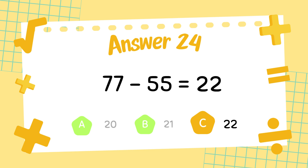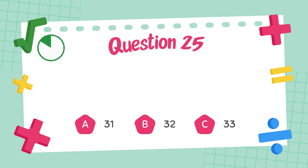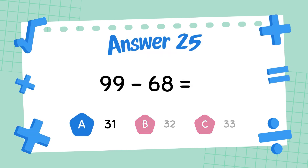The answer is twenty-two. What is ninety-nine minus sixty-eight? The answer is thirty-one.